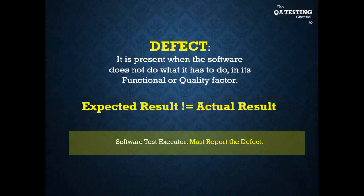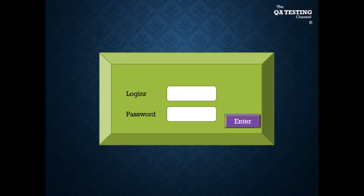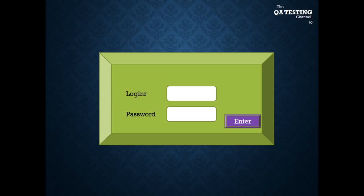Who reports the defect? The software test executor must report the defect. For example, we have this screen and we have a minor defect in there. The login has another letter — the letter R is a minor defect because it must be 'login', not 'loginR'.